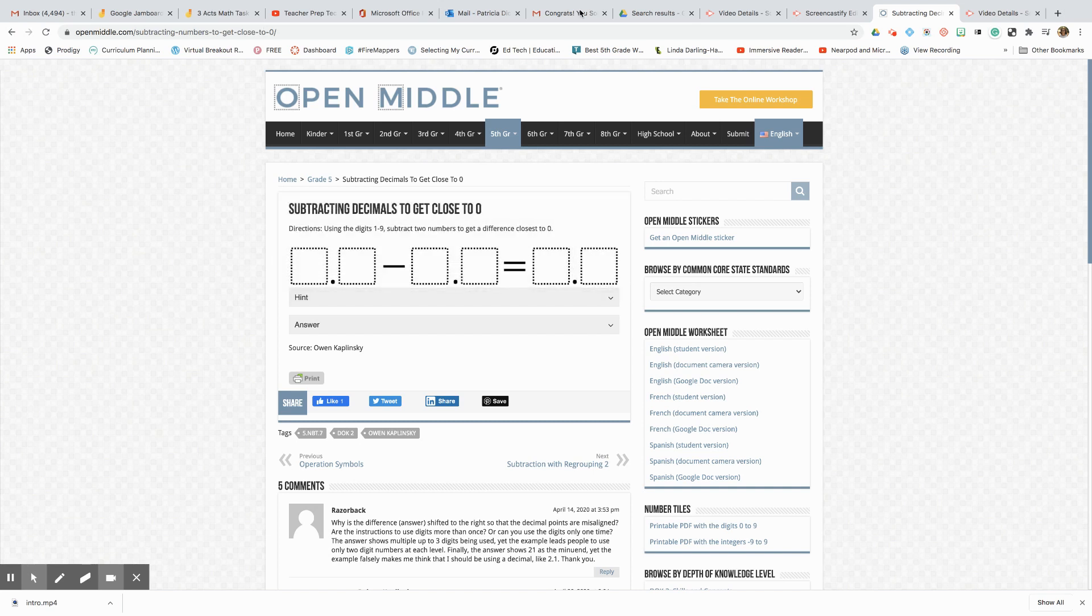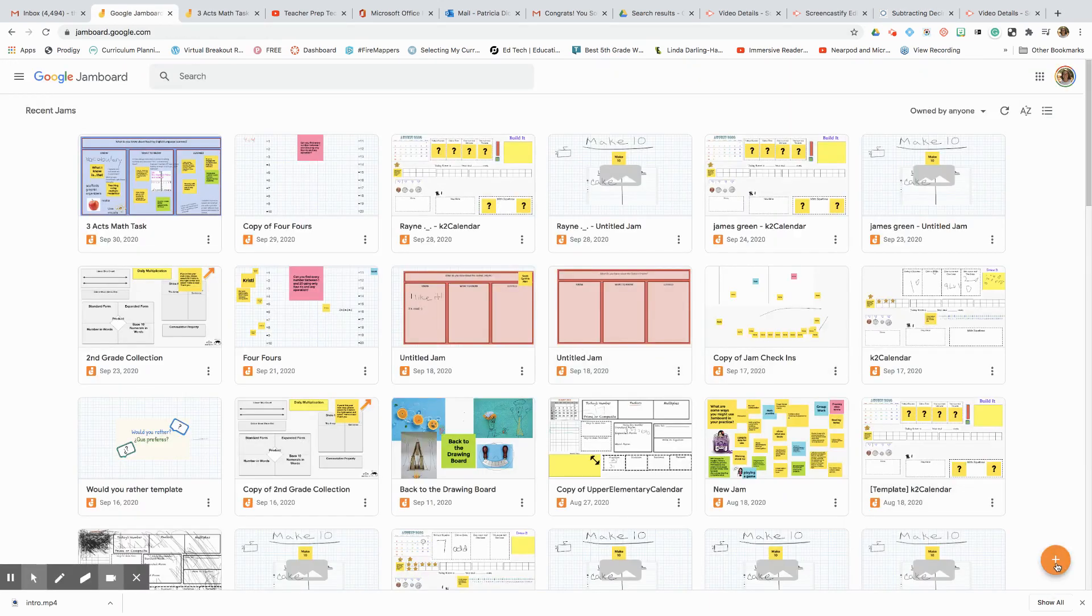Now this photo I can use for my Jamboard. I'm going to go back to Google Jamboard, click on the plus sign - it's going to start a new jam for me. All right, now that I've done that, I have my new jam. Call it 'Fifth Grade Math.'